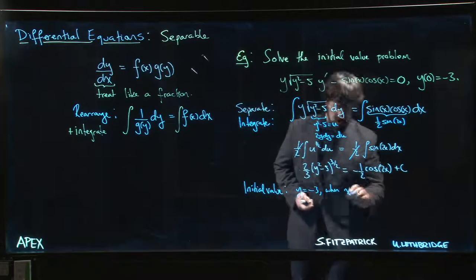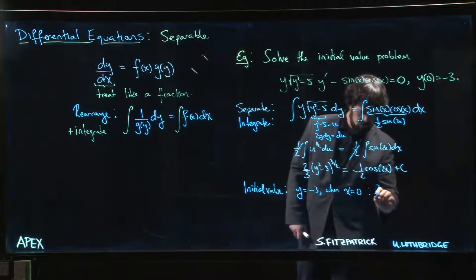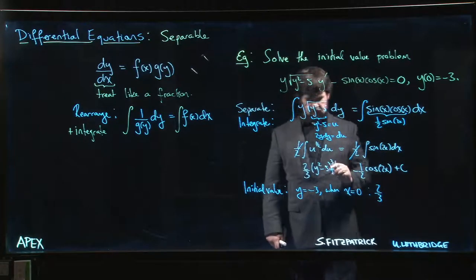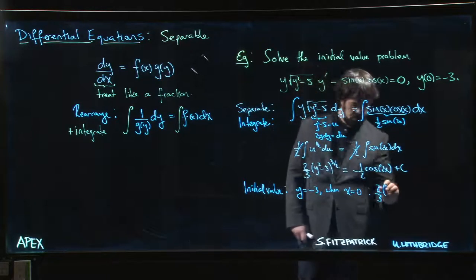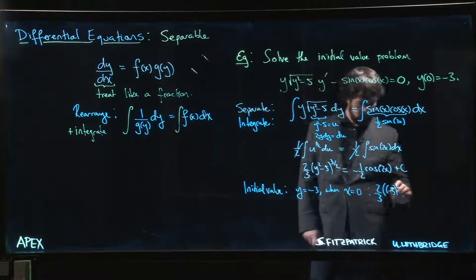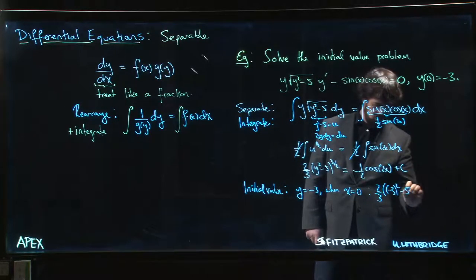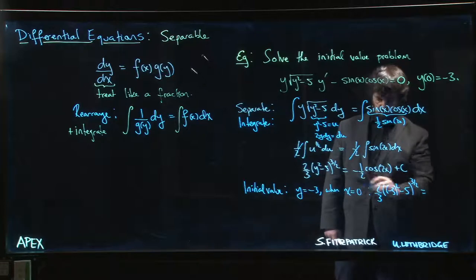Well on this side we get two thirds times, so that's going to be minus three squared minus five to the three over two. Put y equal to minus three, we're going to put x equal to zero.